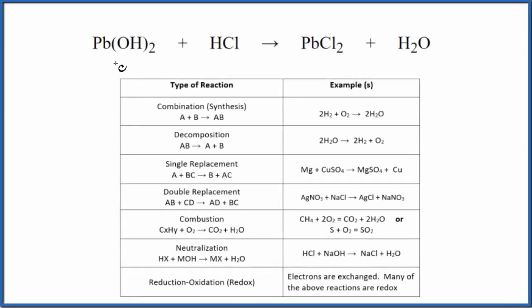In this video, we'll identify the type of reaction for Pb(OH)₂ plus HCl. This is lead hydroxide plus hydrochloric acid.